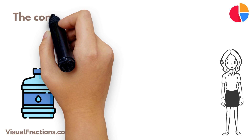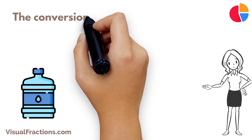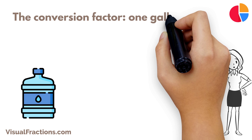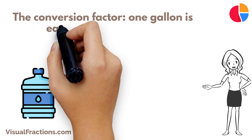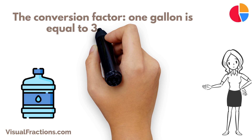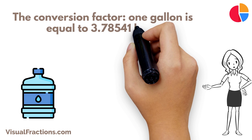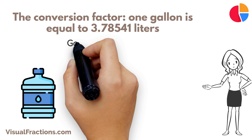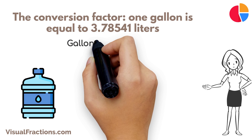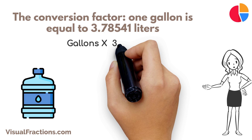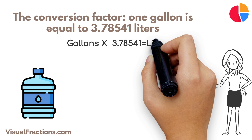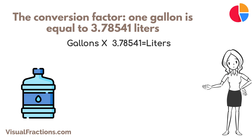First, let's review the conversion factor. 1 gallon is equal to approximately 3.78541 liters. To convert gallons to liters, all you need to do is multiply the number of gallons by the conversion factor.